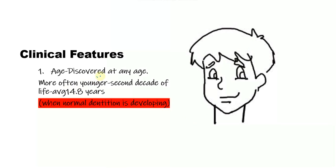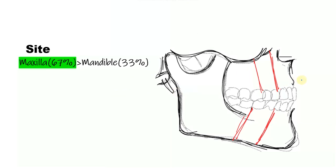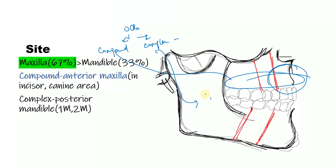Getting into the clinical features: it can be discovered at any age but is more often seen in younger individuals, especially in the second decade, with an average age of 15 years — particularly when the normal dentition is developing. There is a slight male predilection and the most common site of occurrence overall is the maxilla. Compound has a predilection for the anterior maxilla, while the complex has a predilection for the posterior mandible. Compound is more common than complex, so the overall predilection is in the maxilla.